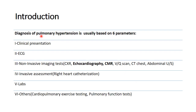The diagnosis of pulmonary hypertension is usually based on six parameters, including the clinical presentation, ECG, non-invasive imaging tests, invasive assessment by right heart cath, labs, and others such as cardiopulmonary exercise test and pulmonary function test. In this lecture, we will focus on the non-invasive imaging tests, especially echocardiography and cardiac MRI.